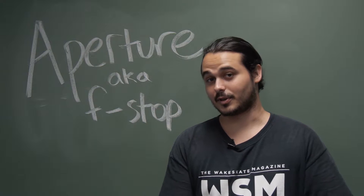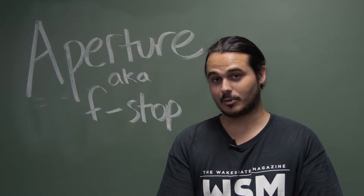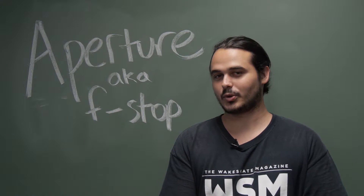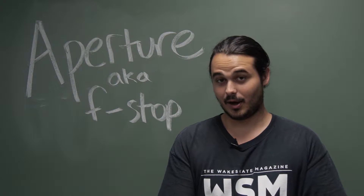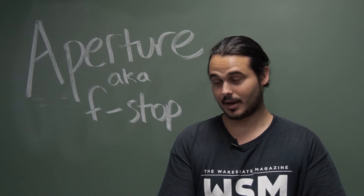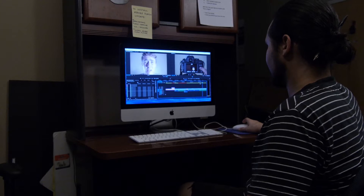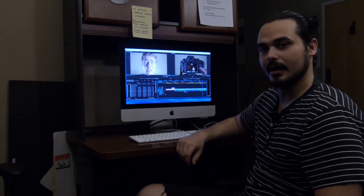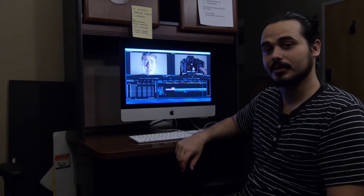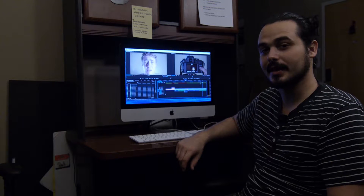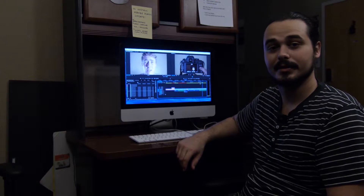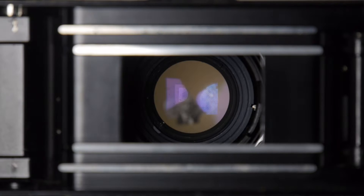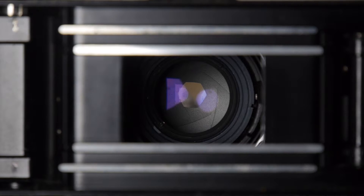The final exposure function we use camera settings to control is Aperture, also known as F-Stop. Inside each lens is a circular gate known as the iris. The iris can be closed down leaving a small circular opening in its center where light will pass through.